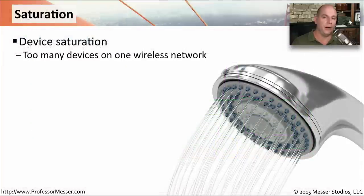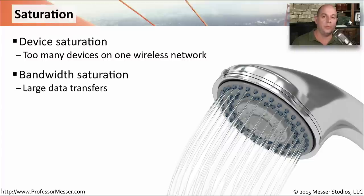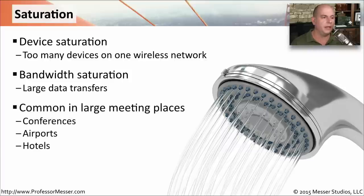One challenge with wireless networks is that anyone can connect to the shared wireless medium and use it. If you have too many devices on the network, overall performance may suffer — this is device saturation. Bandwidth saturation occurs when perhaps only one device is on the network but performing very large data transfers, consuming all available bandwidth. You'll commonly see this in places with many people, like a conference, airport, or hotel, where you can easily overwhelm a wireless access point.